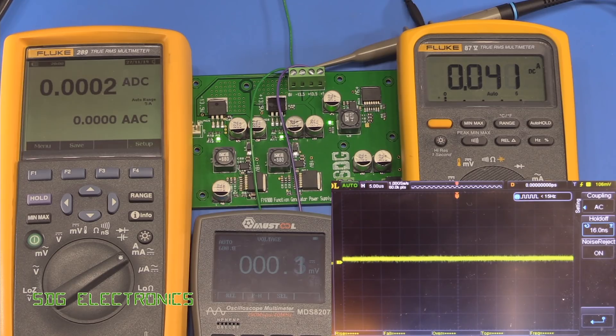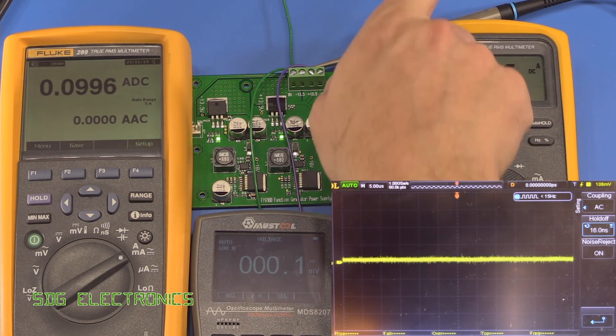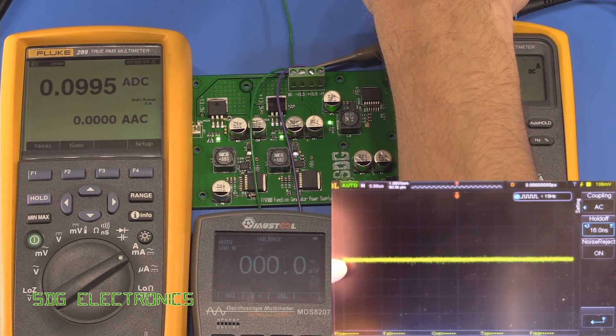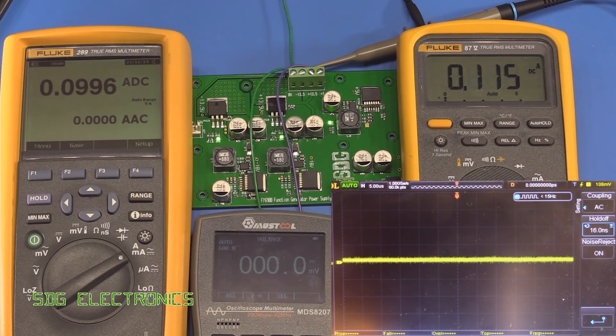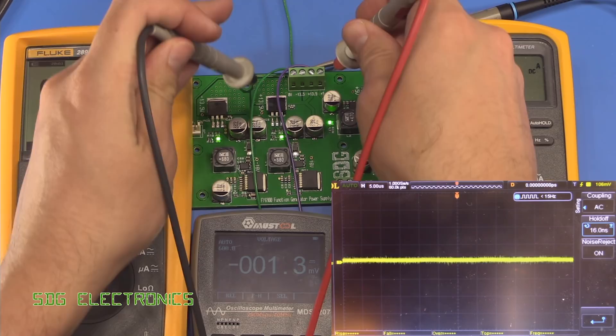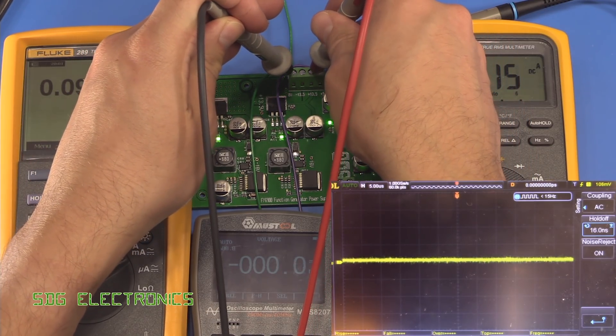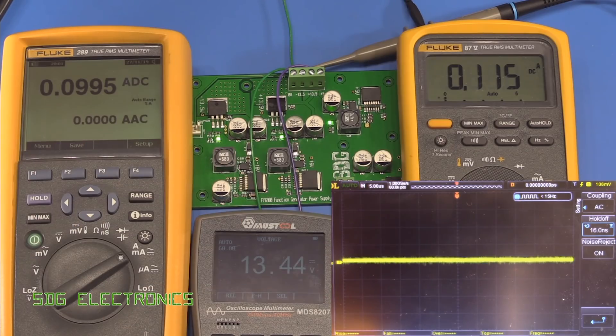Okay, so we're on the 13 and a half volt rail. Let's turn on the load again at around 100 milliamps. What you'll notice this time is we're seeing basically no additional noise here on the oscilloscope. That's really good. We'll just check that we're still behaving okay, 13 and a half volts. Yep, that's fine.